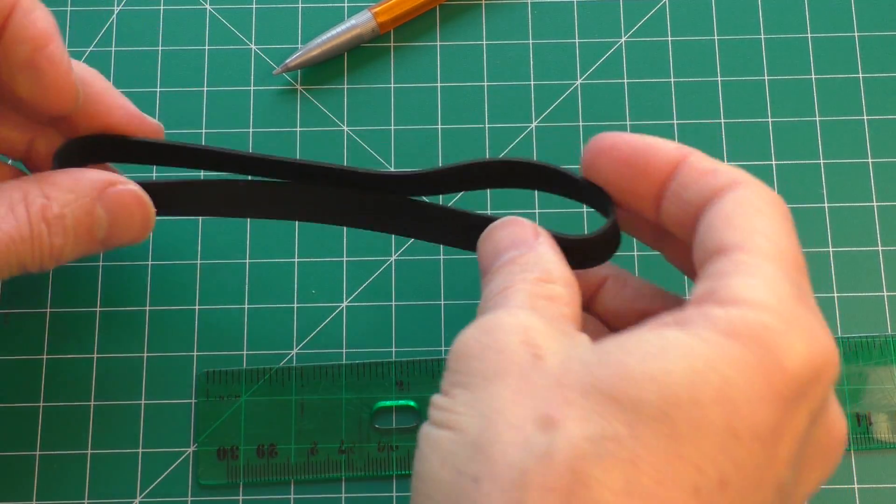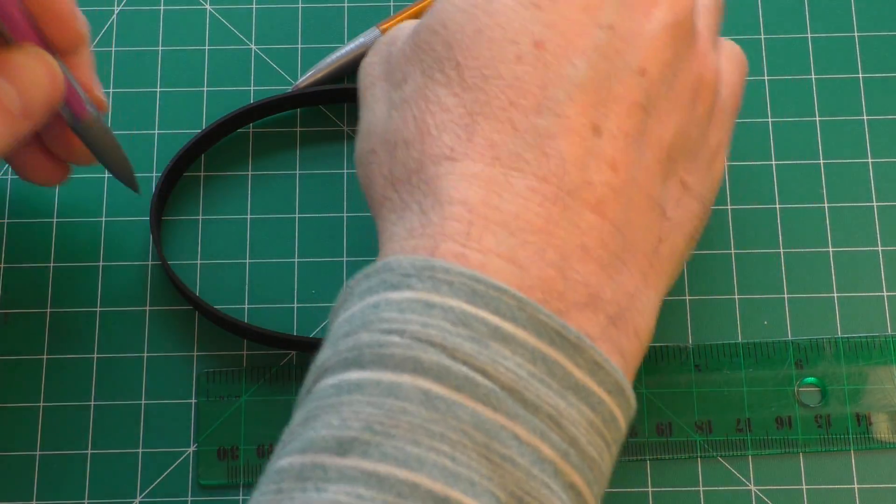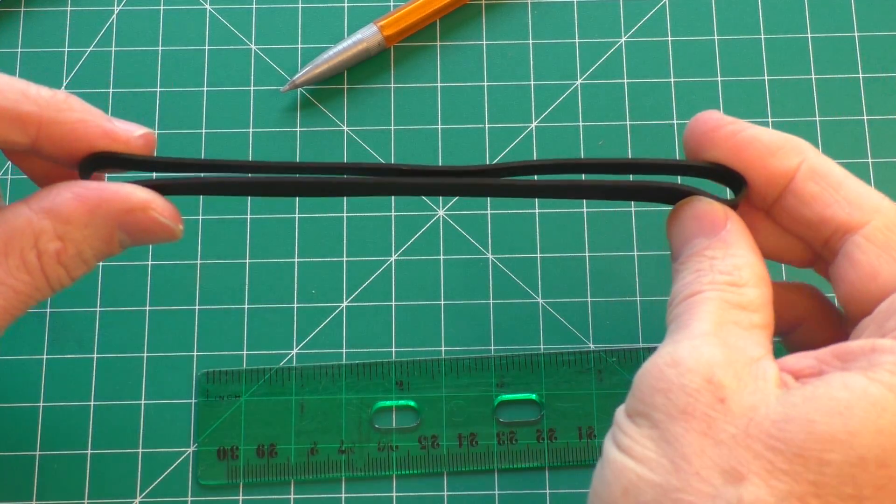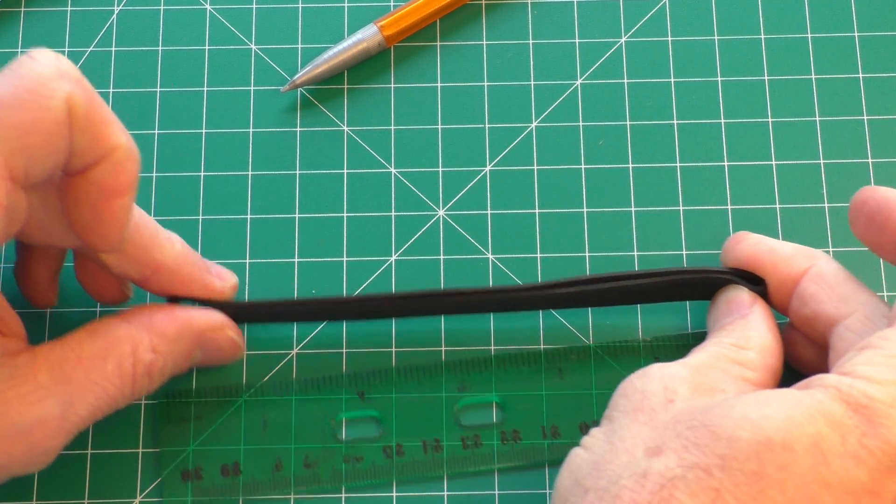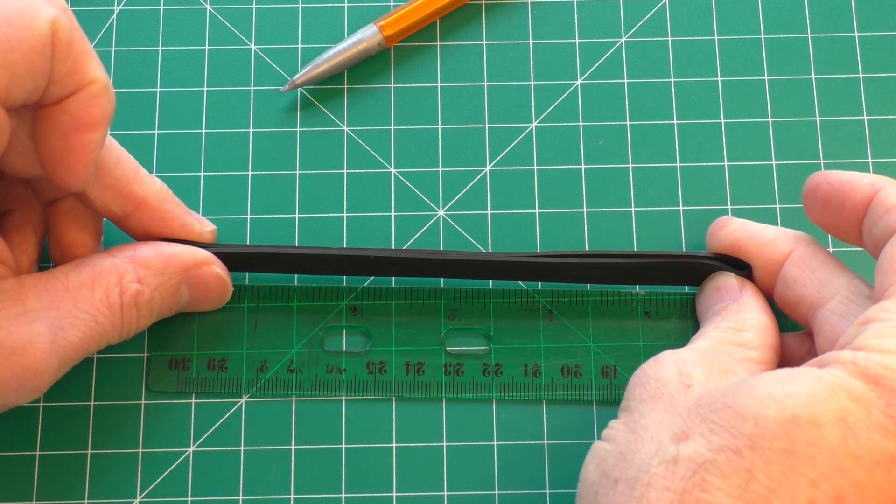Now for larger belts like this, it might be kind of harder to pull it with a pencil. So you could just basically kind of loosely fold it like this and measure the length just like that.